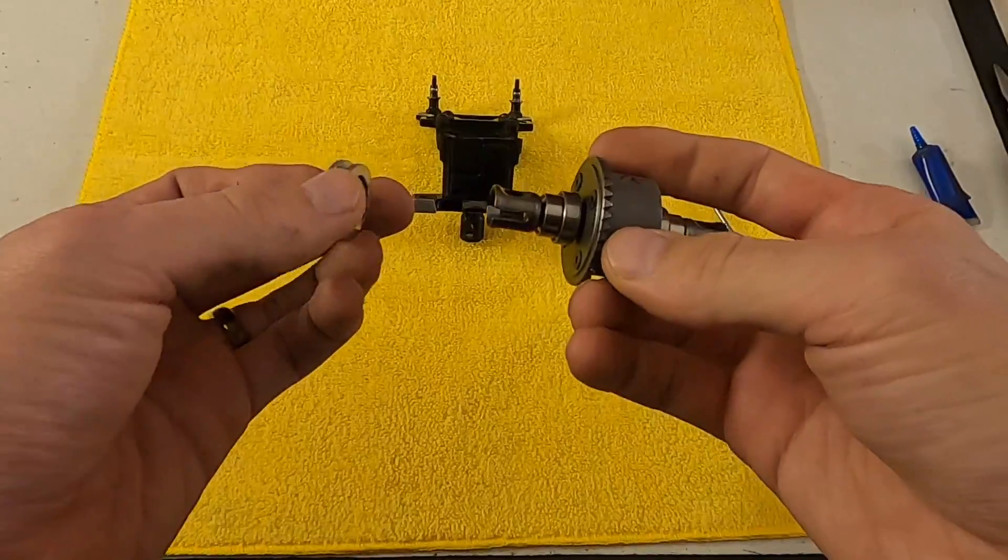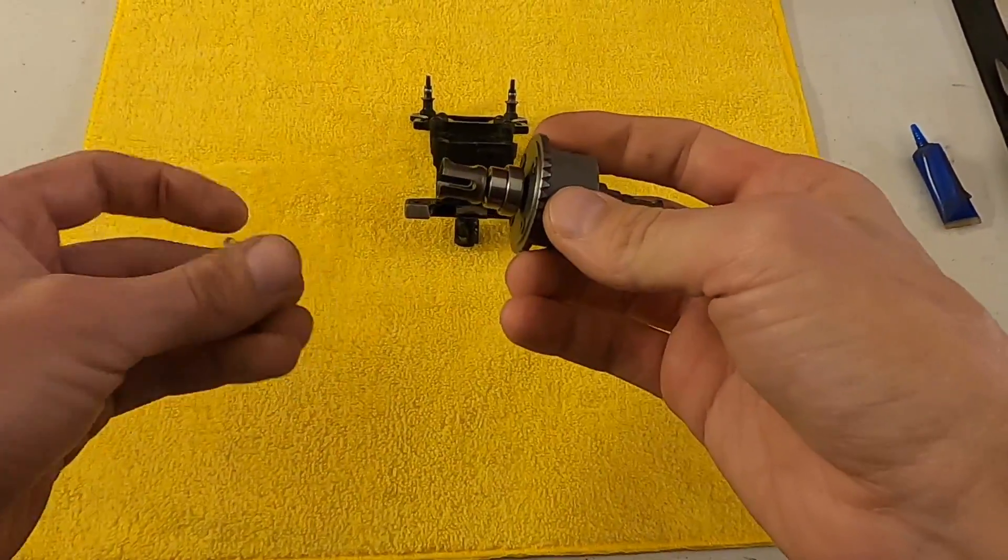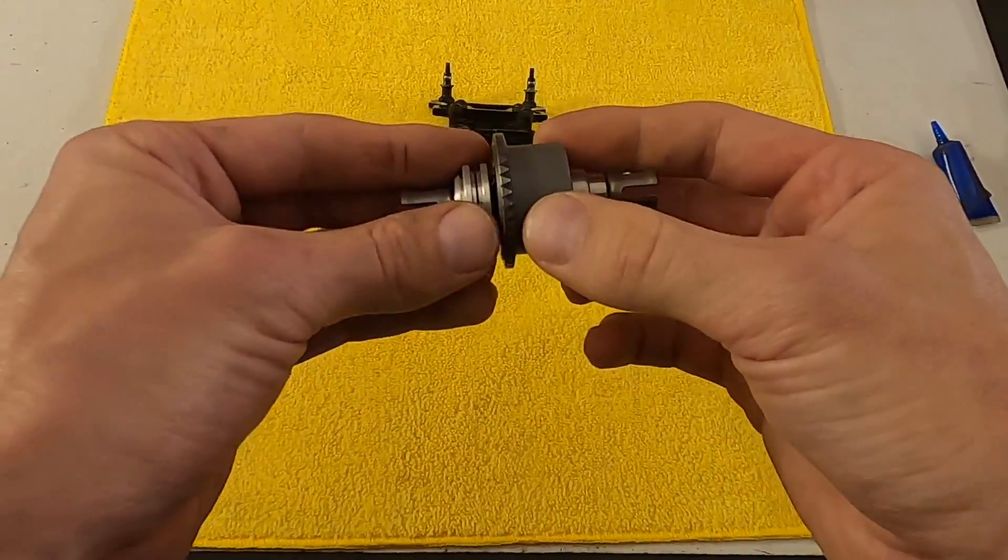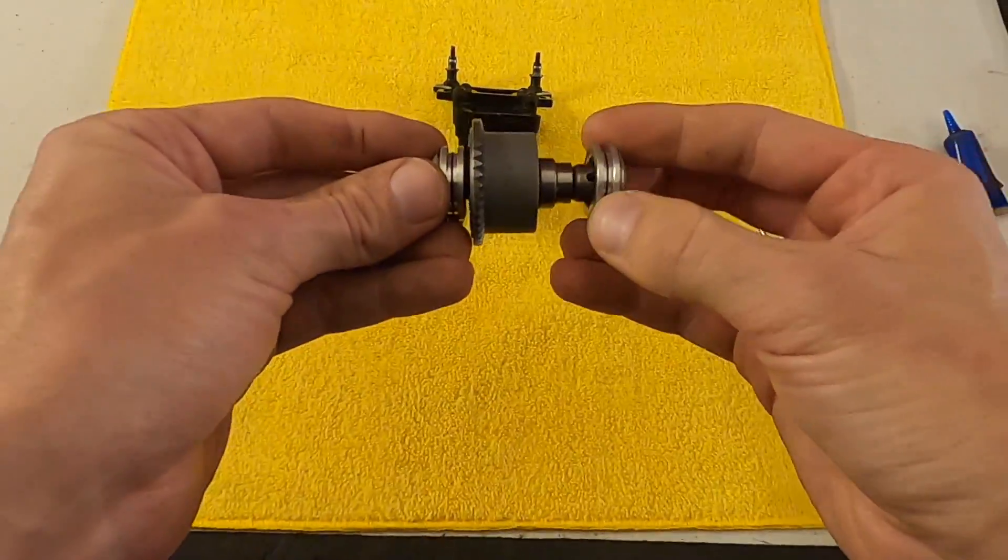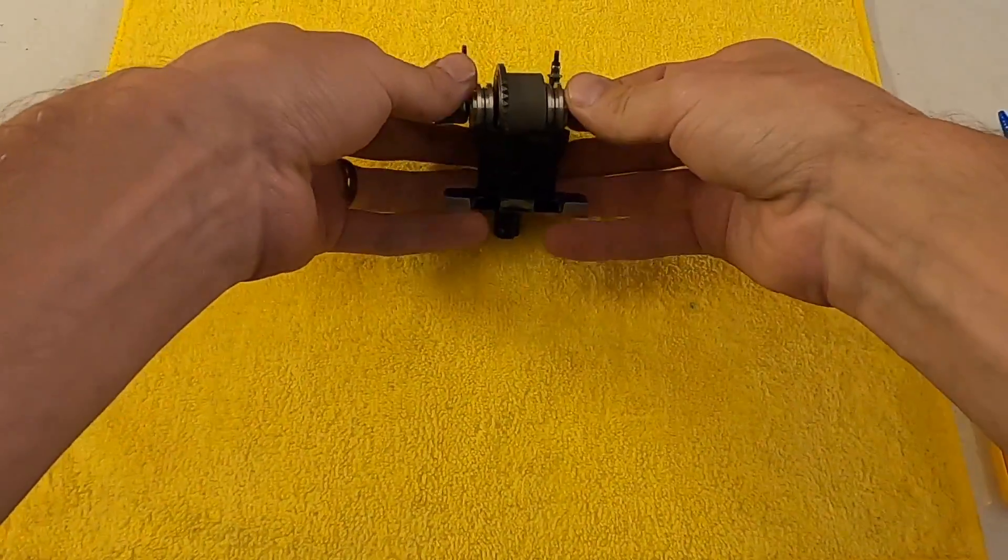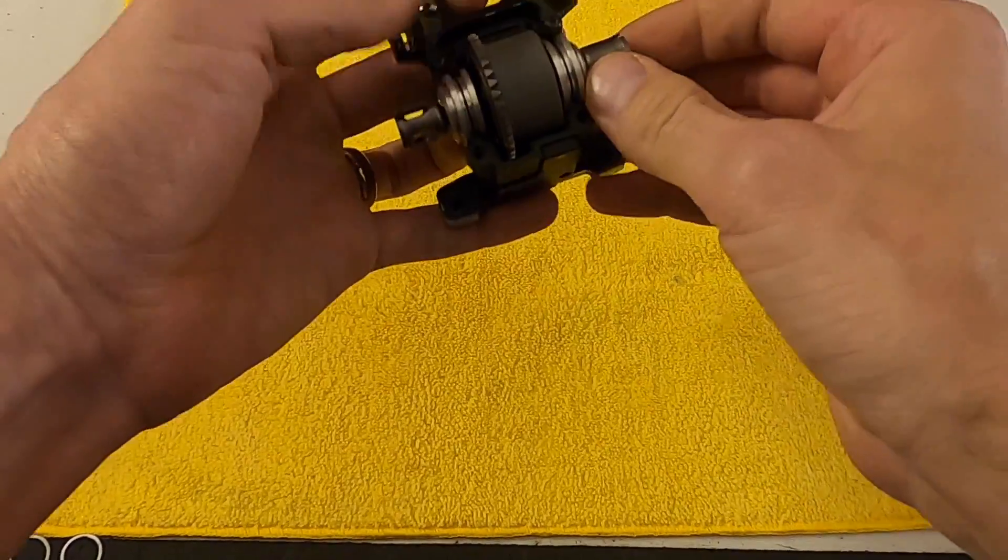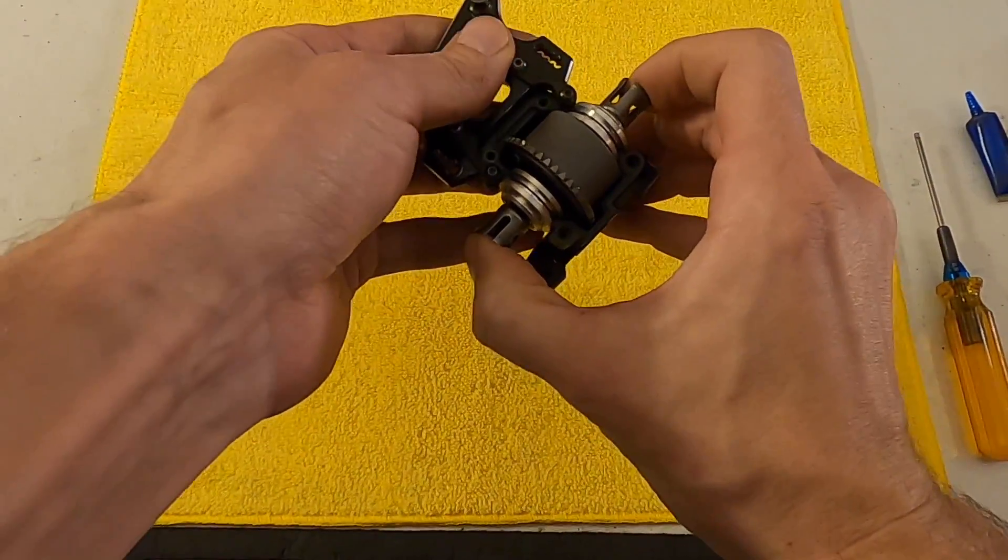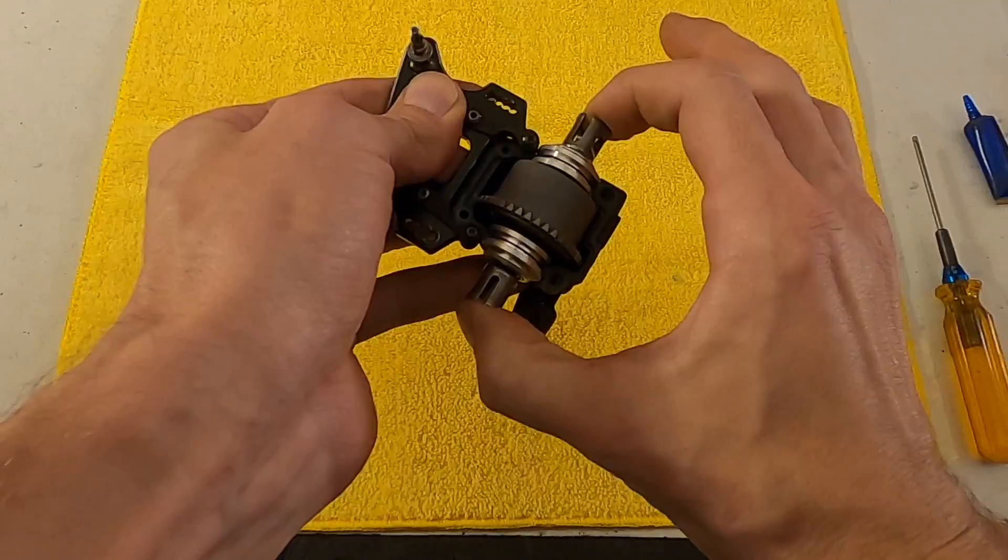For the shimming of the diff, I place both of the couplers on there. I can drop the diff in and immediately see if I need shims or not. As the diff's in here, you can see I have a lot of play back and forth, so I'm going to add some shims.